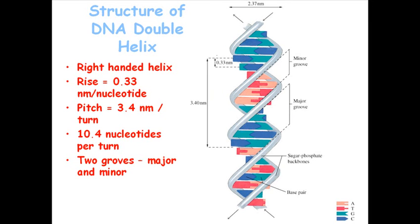The structure of the DNA double helix is given here as a schematic presentation. The distance between two bases is called the helix rise, which is 0.34 nanometers. The overall distance of one full rotation, when viewed from that direction, is 3.4 nanometers, and this is called the helix pitch.